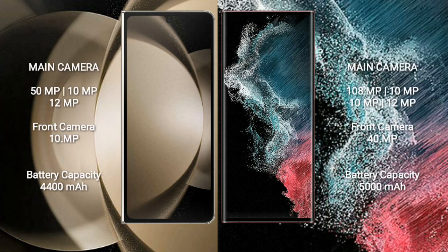The Samsung Galaxy Z Fold 5 features a rear triple camera setup: 50MP plus 10MP plus 12MP, and a front camera of 10MP. The Samsung Galaxy S22 Ultra features a rear quad camera setup: 108MP plus 10MP plus 10MP plus 12MP, and a front camera of 40MP.